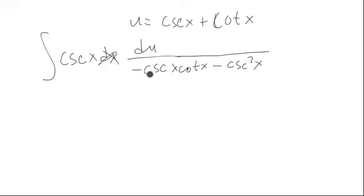You can factor out a cosecant, and that'll cancel with that cosecant. And you'll simply be left with du over negative quantity cotangent x plus cosecant x, which happens to be u.